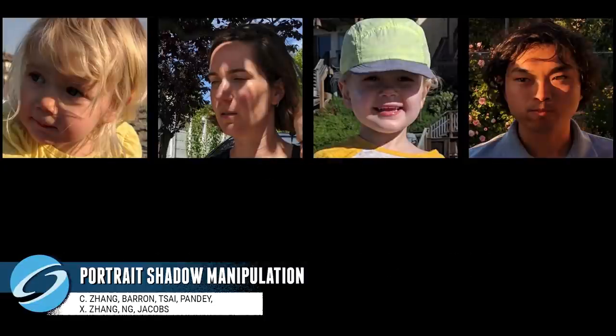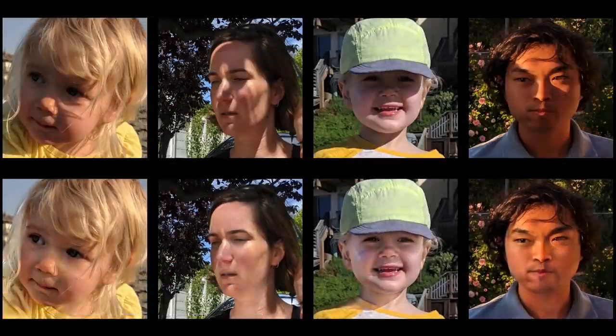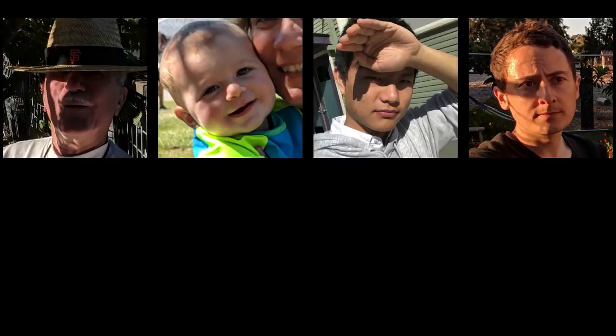Neural networks can improve photographs of people's faces by removing external shadows and simulating a soft fill light.